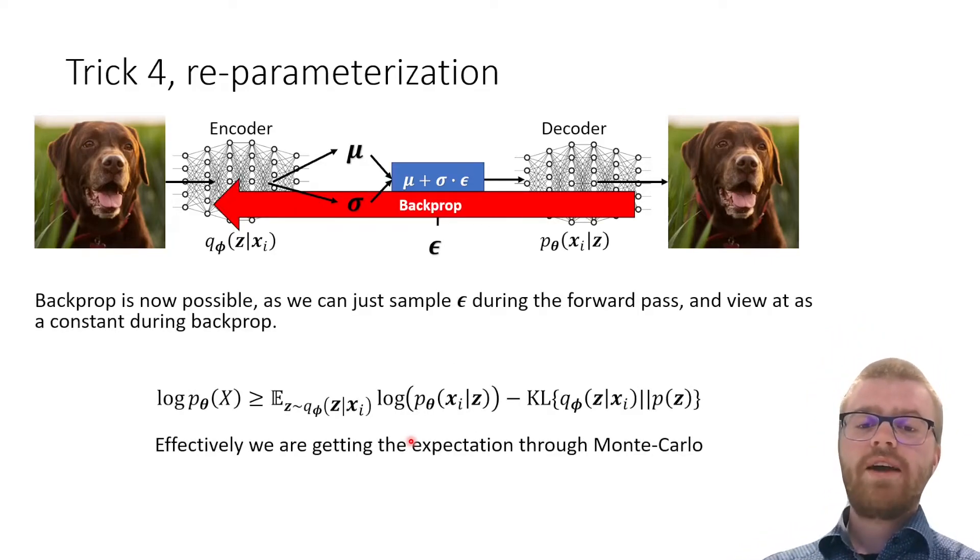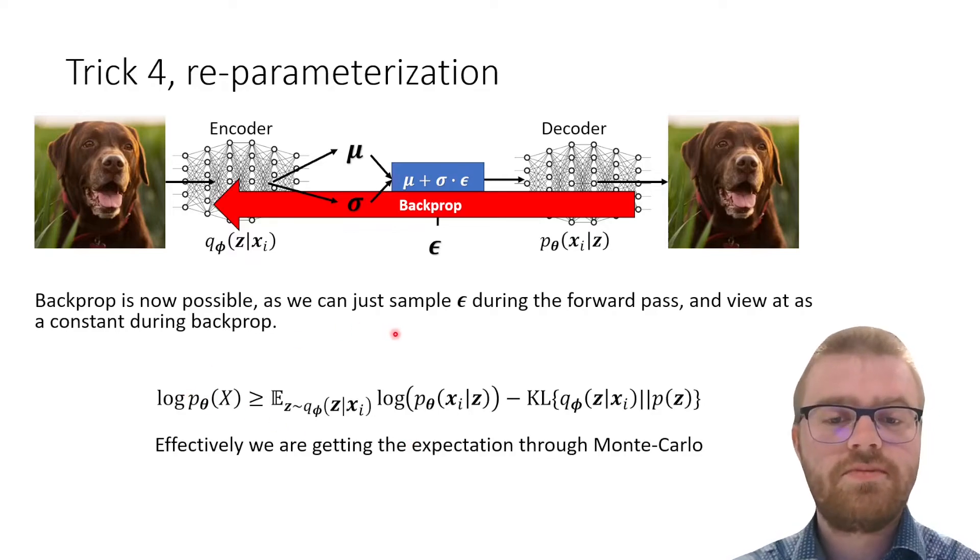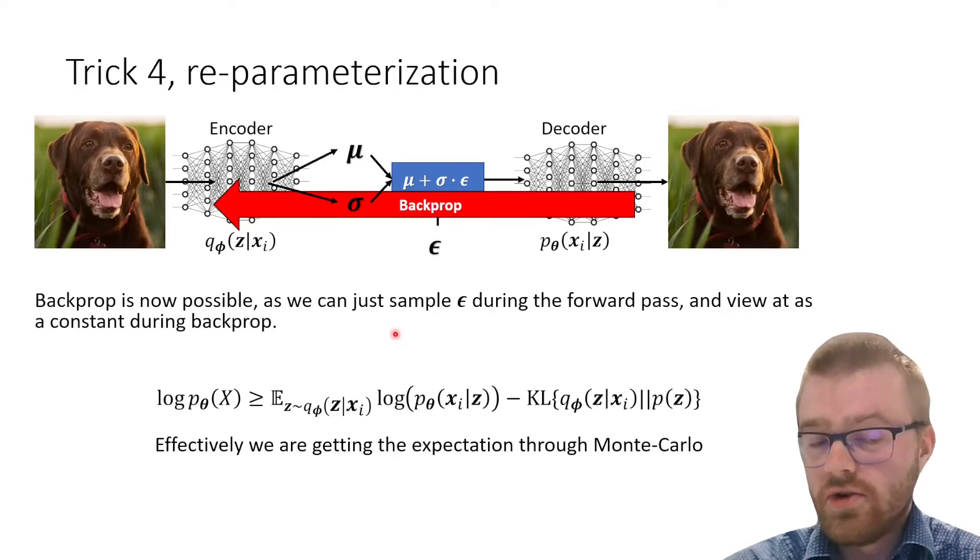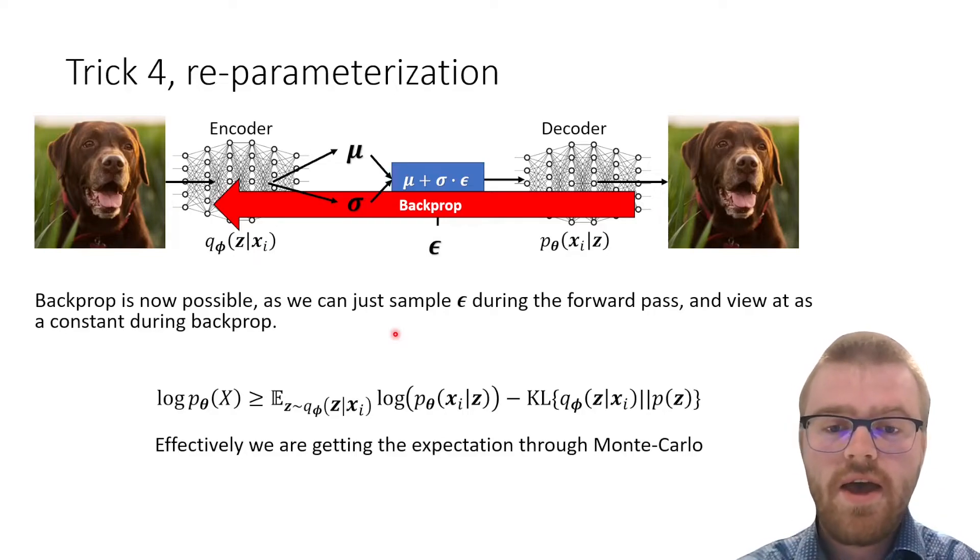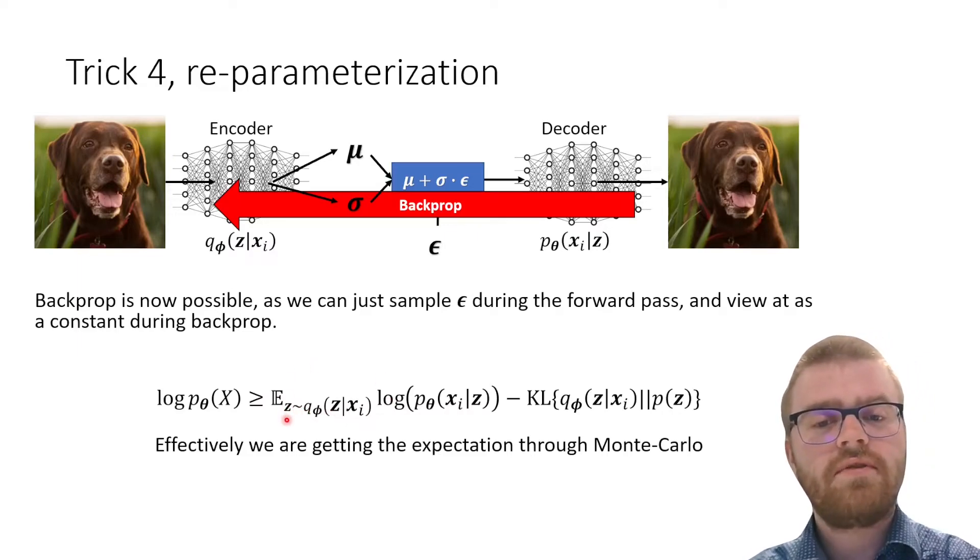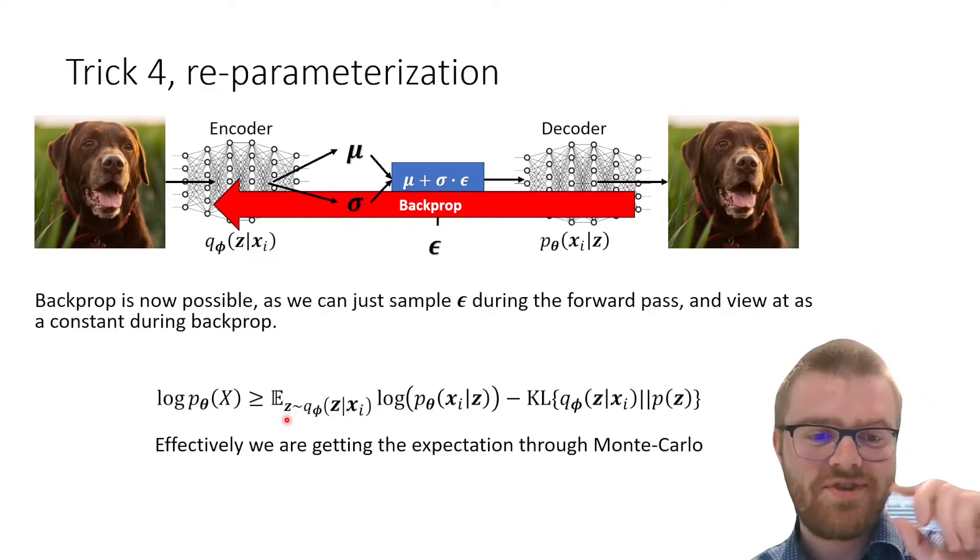Now backpropagation is actually possible. We can sample from ε during the forward pass and view it as a constant during the backpropagation. We can now easily write out the derivatives everywhere, and we are effectively getting a Monte Carlo expectation. We are effectively saying this expectation over z given q—we are giving one sample at each training batch.